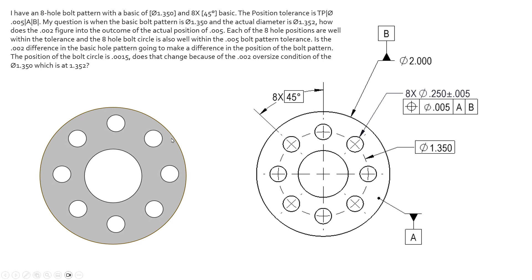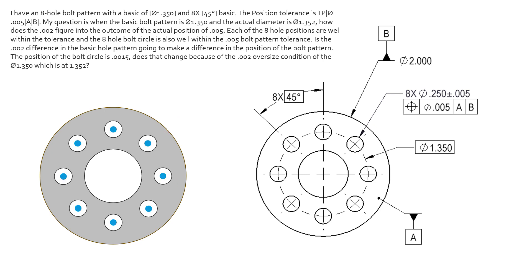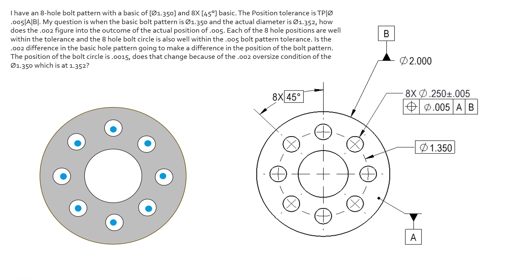It doesn't really affect the location of the center of the bolt pattern. All we need to make sure is that each one of these holes lands inside its own tolerance zone diametrically of five thousandths. We can see here an example of that — each one of these holes has this diametric tolerance zone of 0.005 and each hole can shift to any position within it. As far as this feature control frame is concerned, there are eight line items on an inspection report telling us how each one of these holes is in relation to its true position.